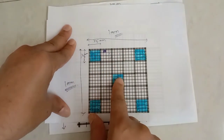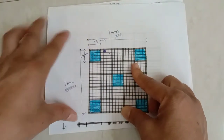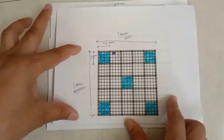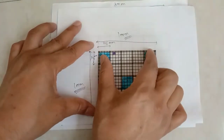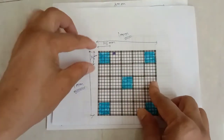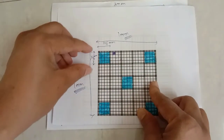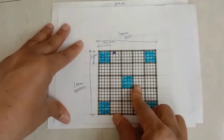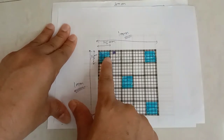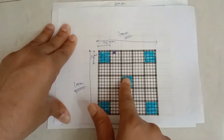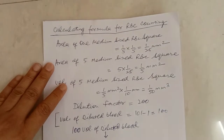For the RBC counting formula: each large square in the counting grid has dimensions of 1 mm × 1 mm. Since the central square has 25 medium-sized squares, each medium-sized square has a dimension of 1/5 × 1/5 mm. For RBC counting, we count 4 corner medium squares and 1 central medium-sized square — a total of 5 squares.